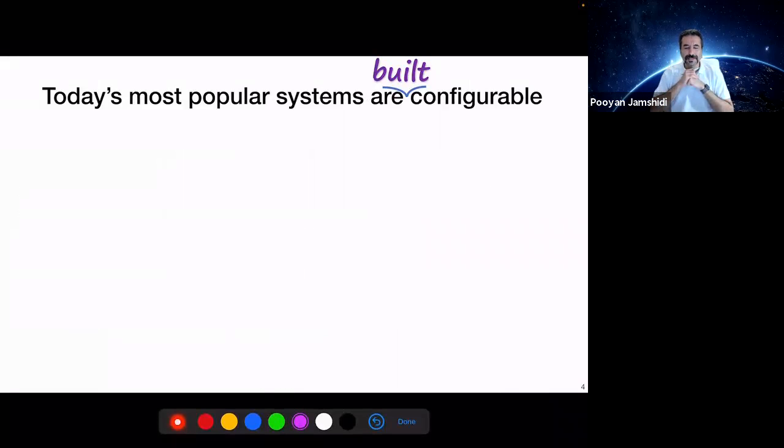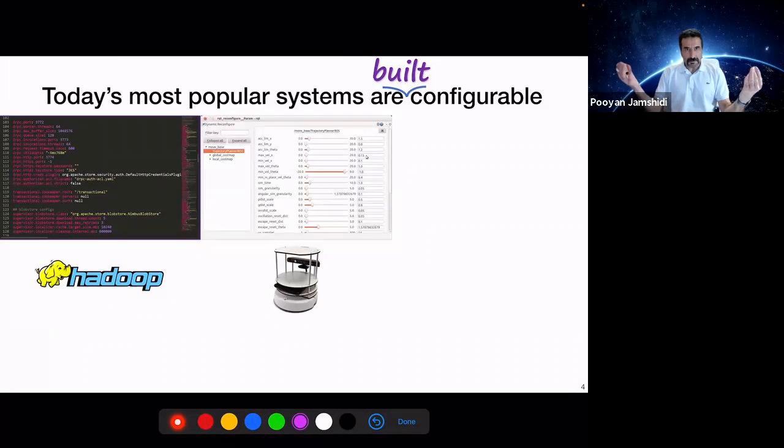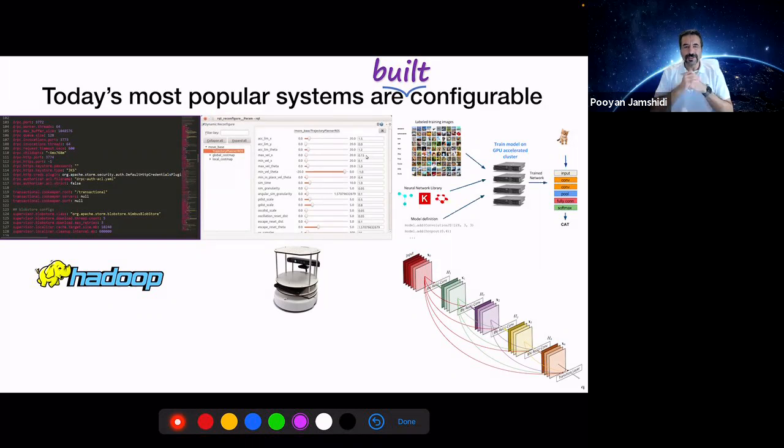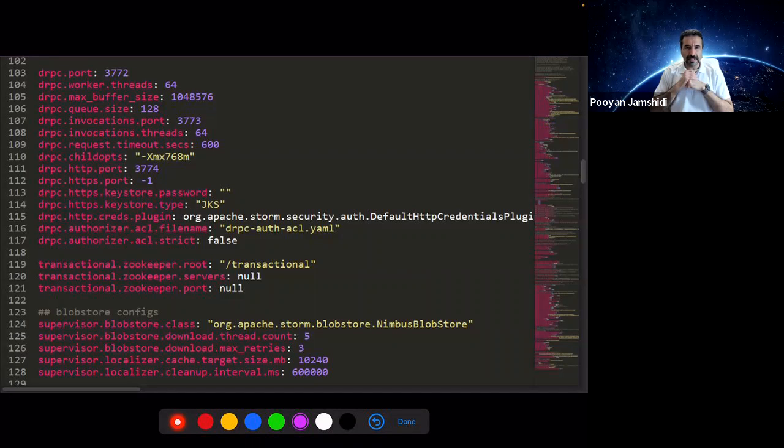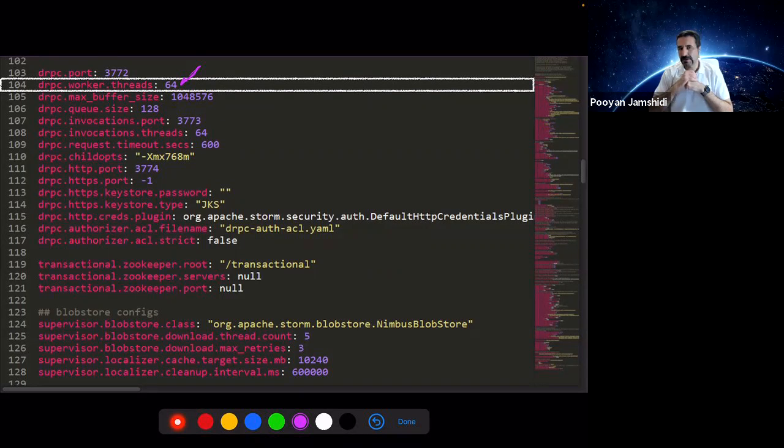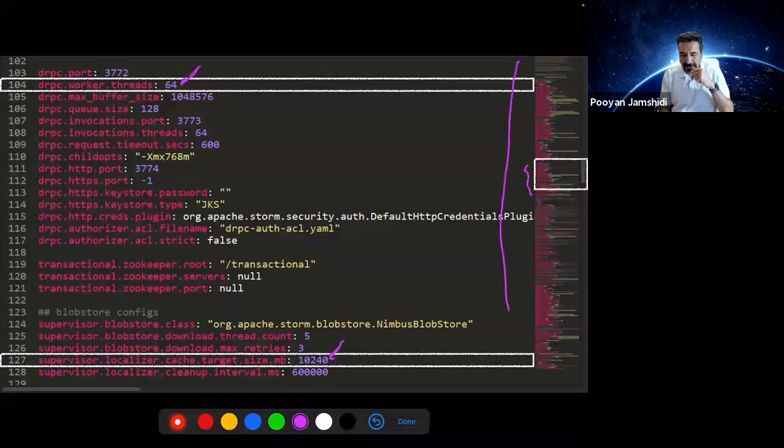Today most popular systems are built configurable. We have big data systems such as Apache Hadoop, many robotics applications are highly configurable, and machine learning systems are also built highly configurable. Here you see Apache Hadoop with a bunch of different configuration options. For example, the number of threads set to 64, or the size of memory set to a specific value that end users can change to see the result in performance.